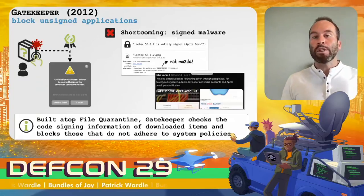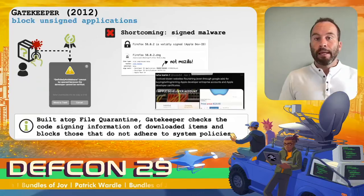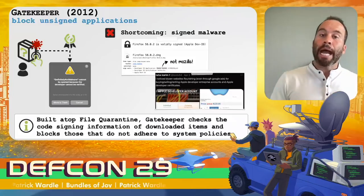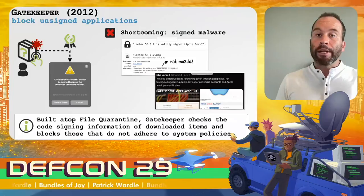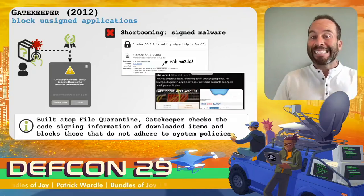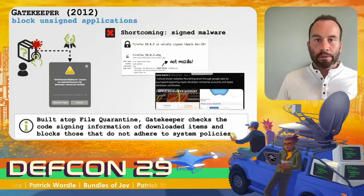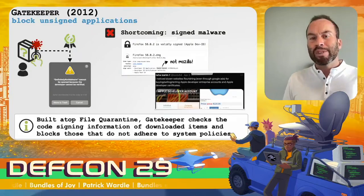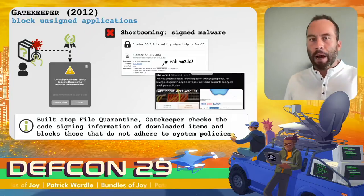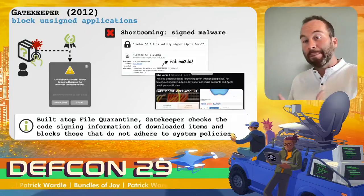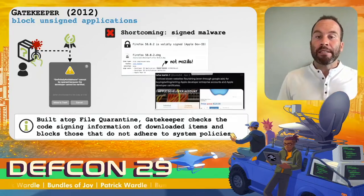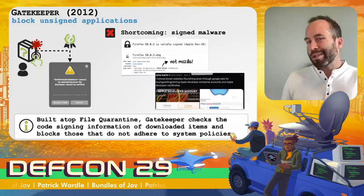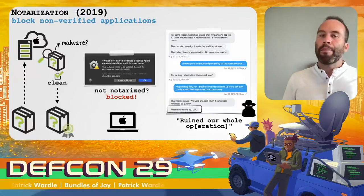That next step was Gatekeeper, introduced in 2012. Gatekeeper will block unsigned applications from running. When the user launches a downloaded item, the OS intercepts it and Gatekeeper checks if it's validly signed. If not, it blocks it. That was a good approach because at the time the majority of Mac malware was unsigned. Of course, the shortcoming was that malware authors simply began signing their malware — it's easy to fraudulently obtain or steal a legitimate code-signing developer ID, which allows you to sign your malware and bypass Gatekeeper.